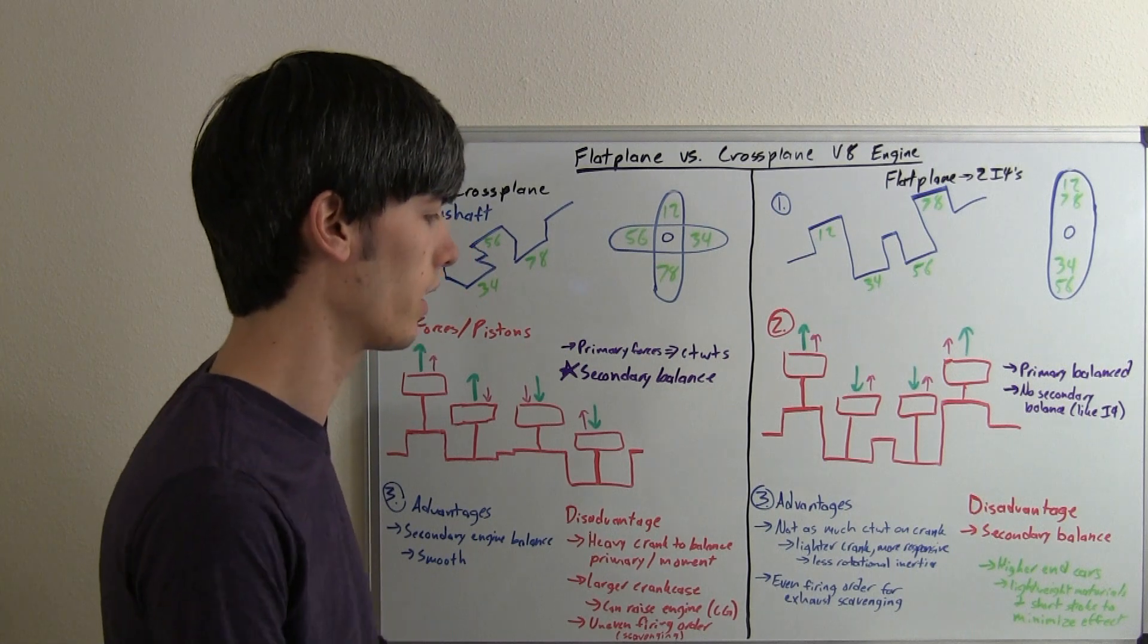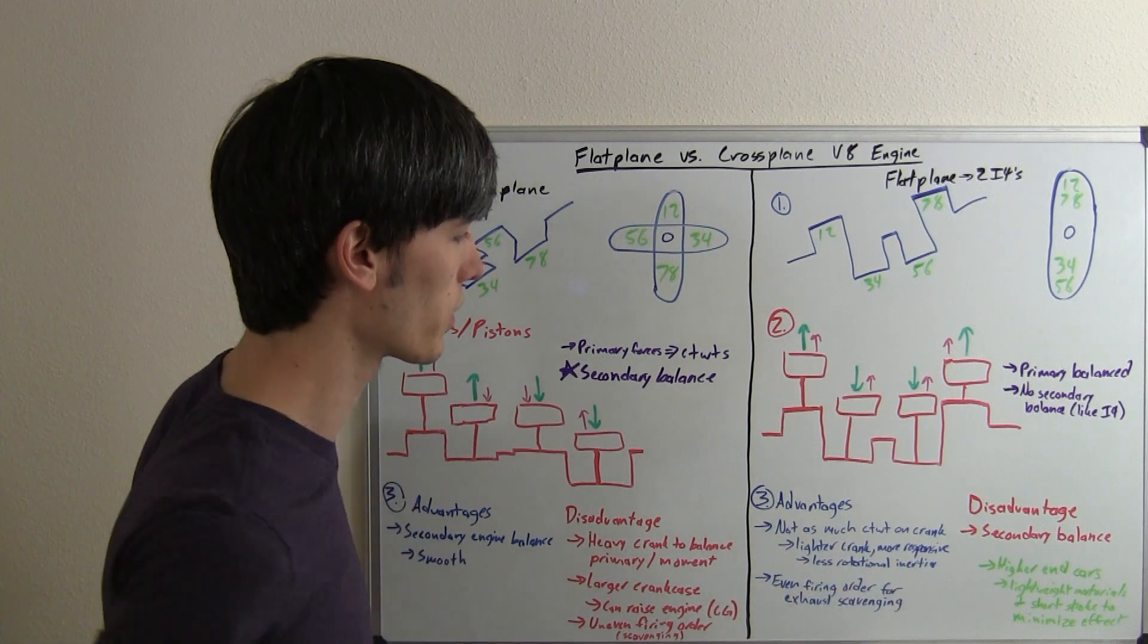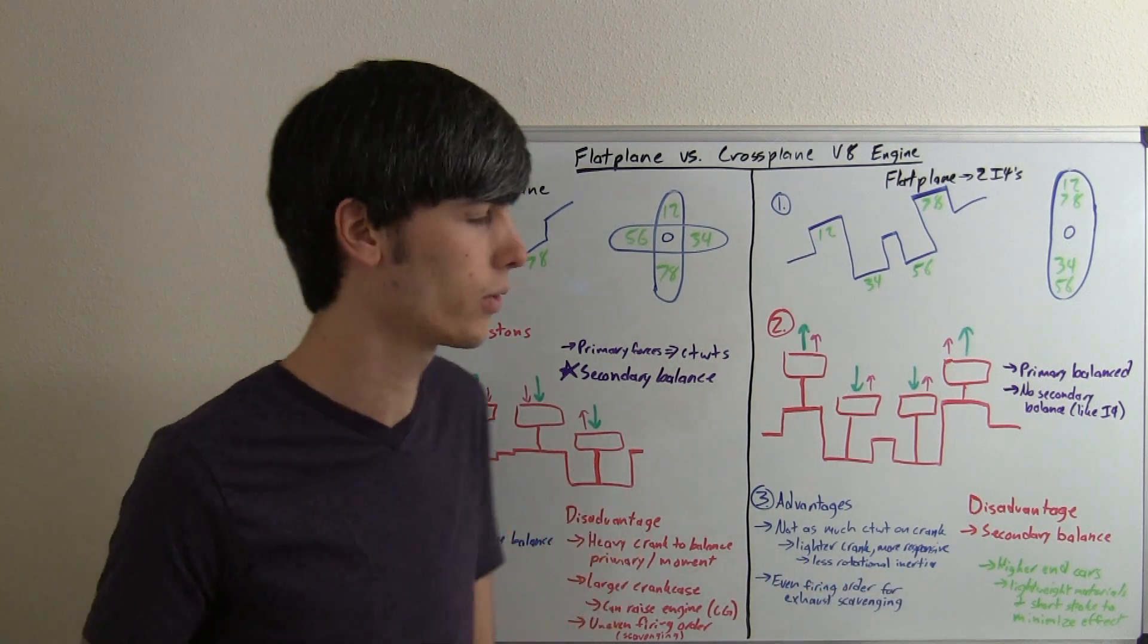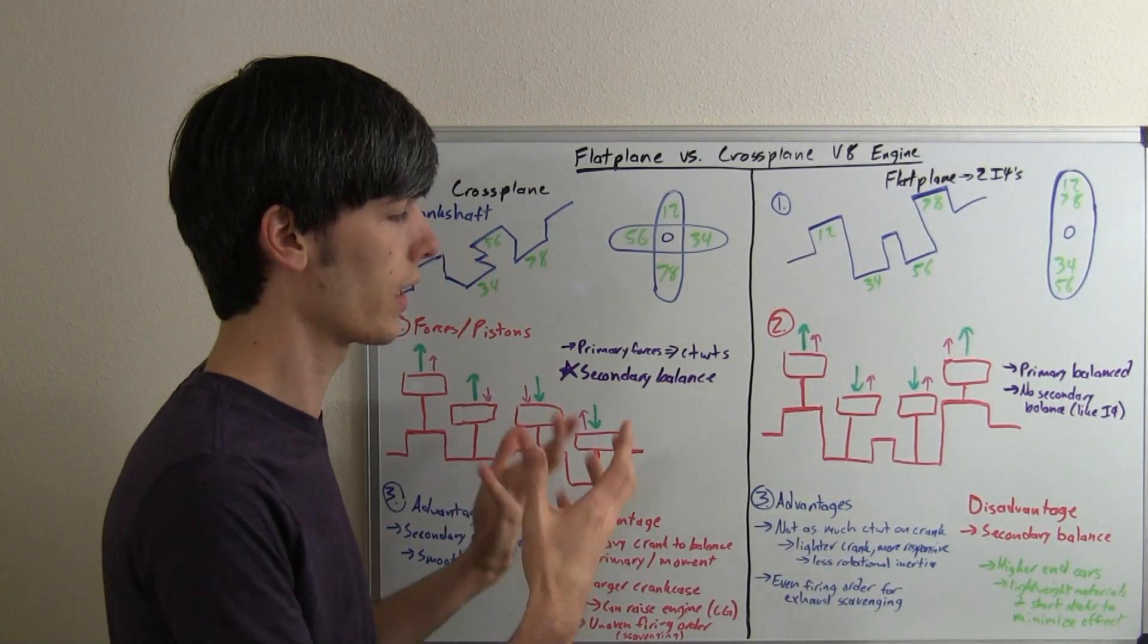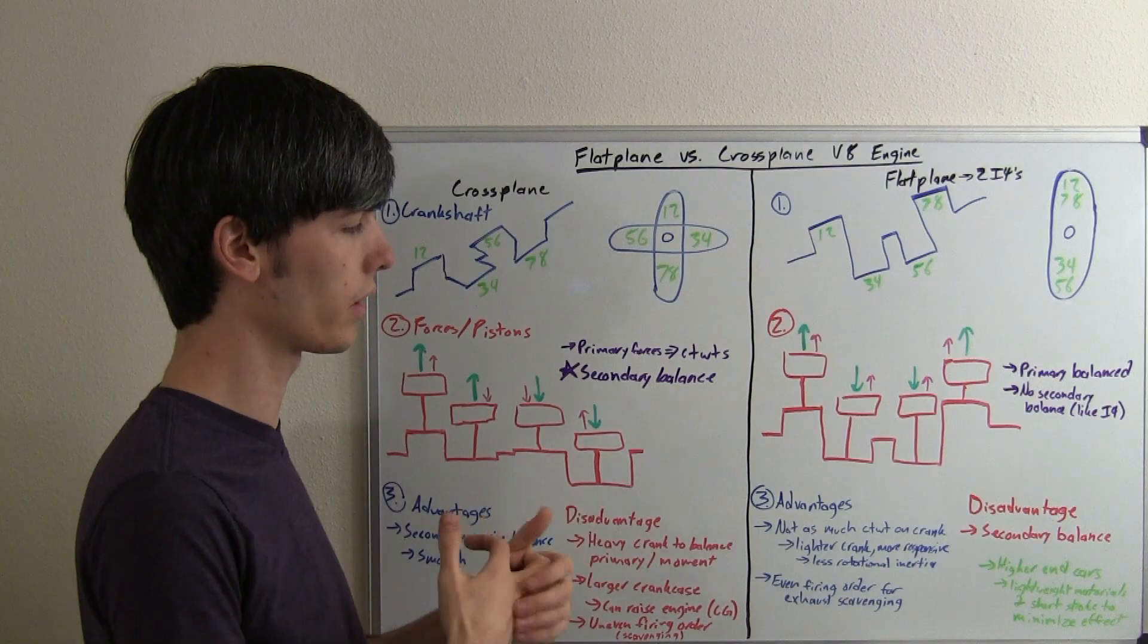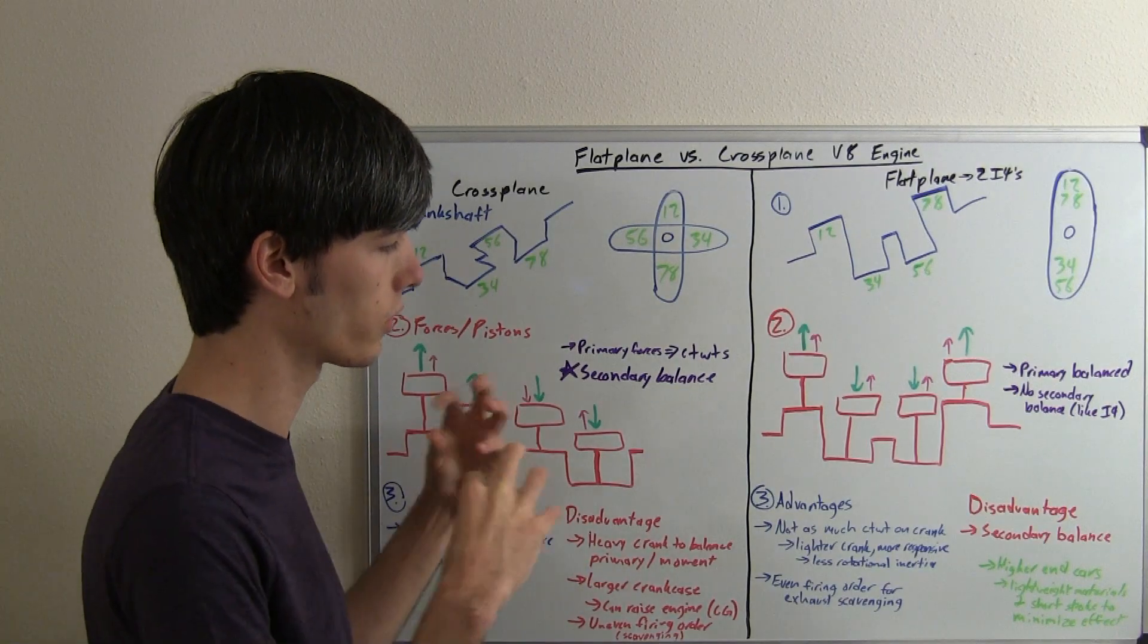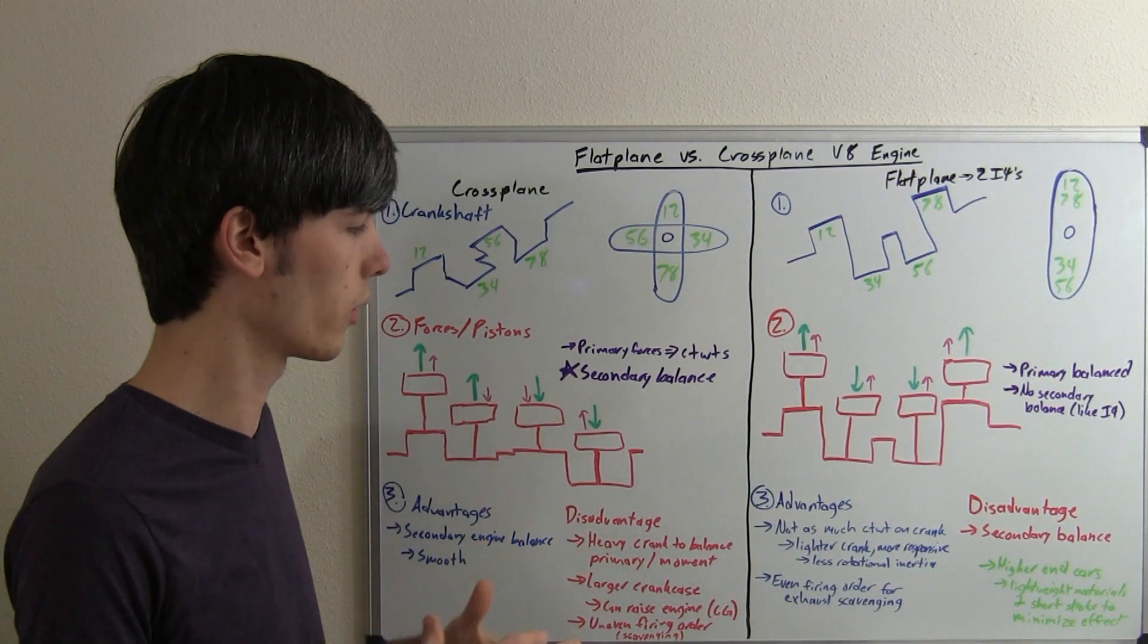So advantages of a flat-plane V8. Well, it's not going to have as much counterweight on the crank, so that means less rotational inertia, it's going to have a more responsive crankshaft, so your engine's going to rev up a little easier, and you're going to have less power going into rotating that crank, more going to the wheels.